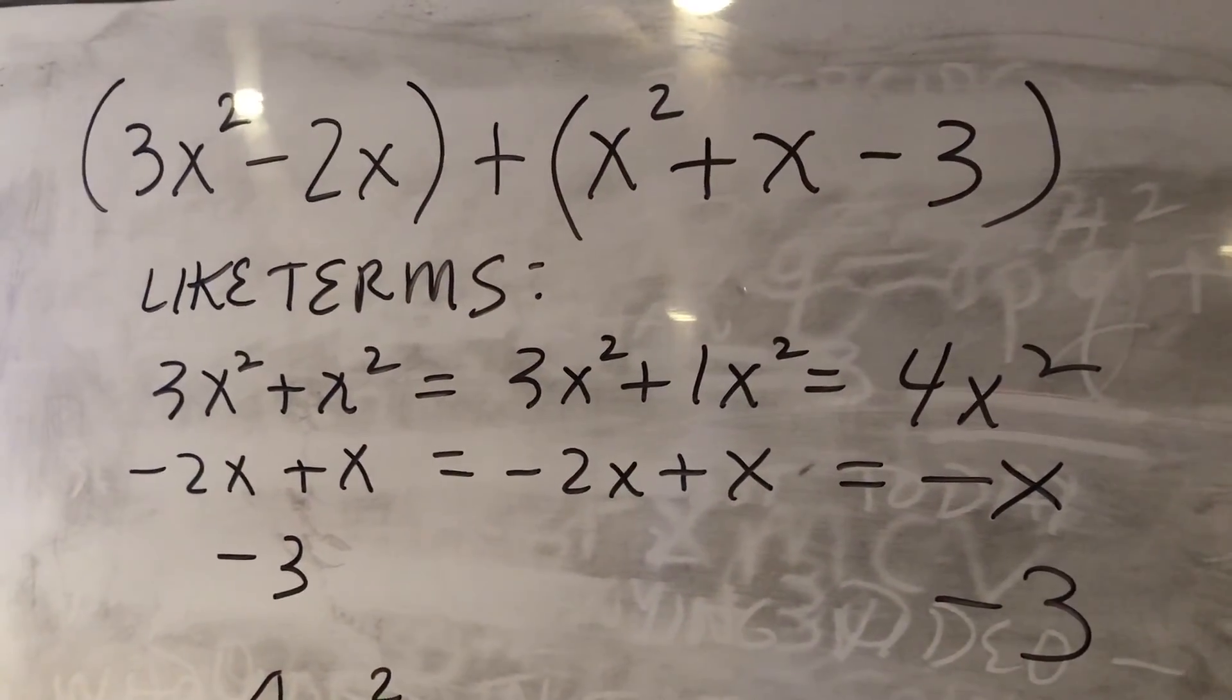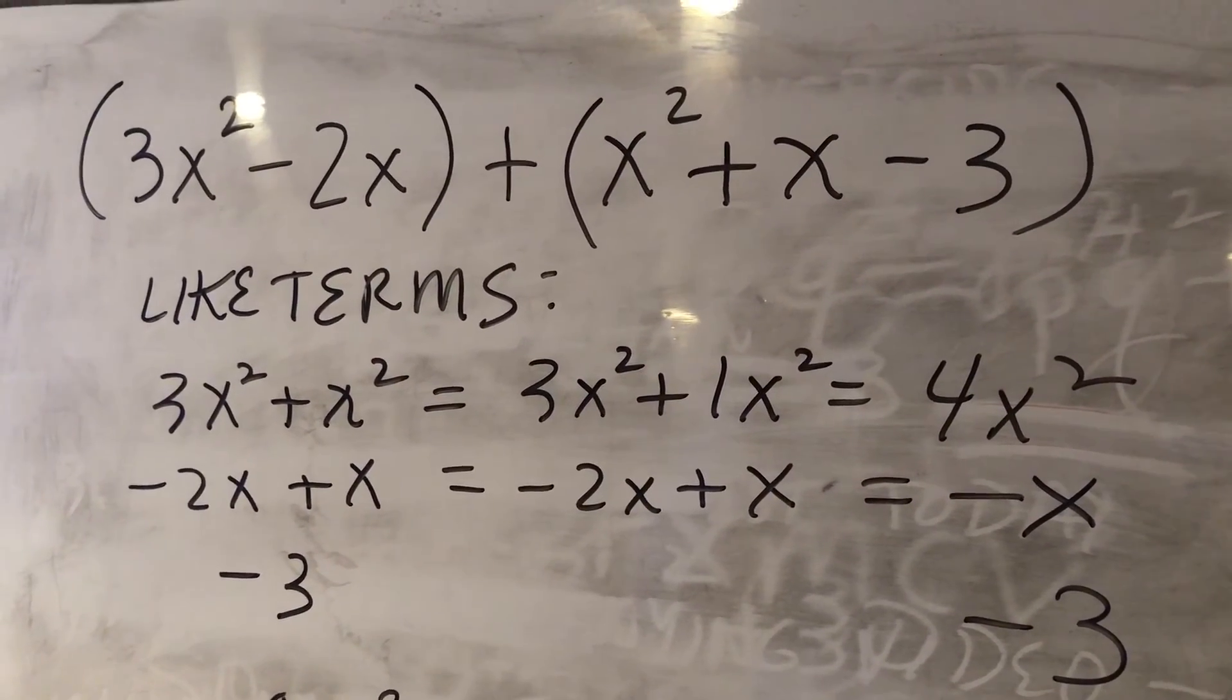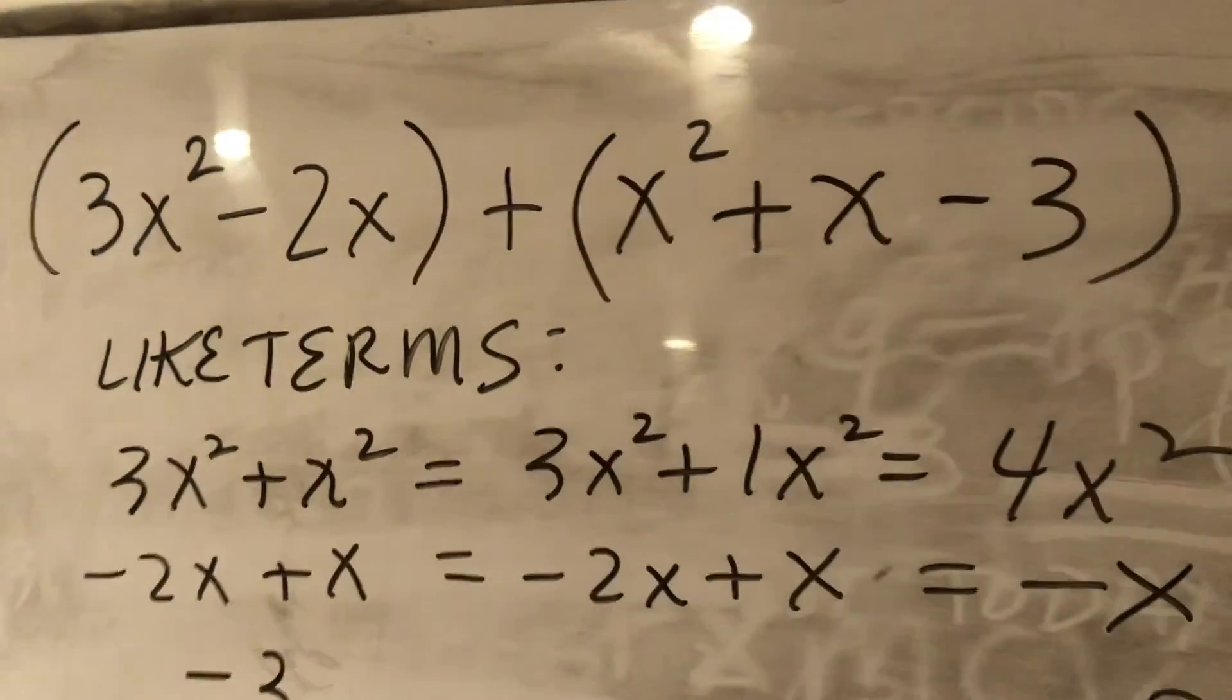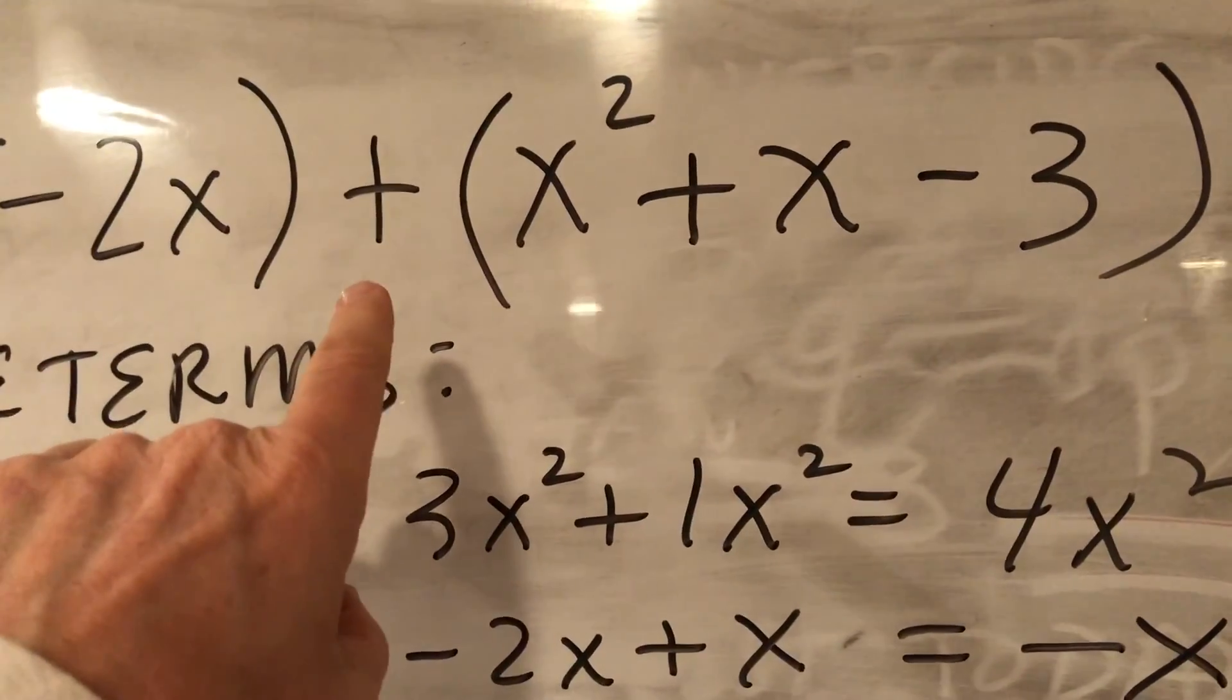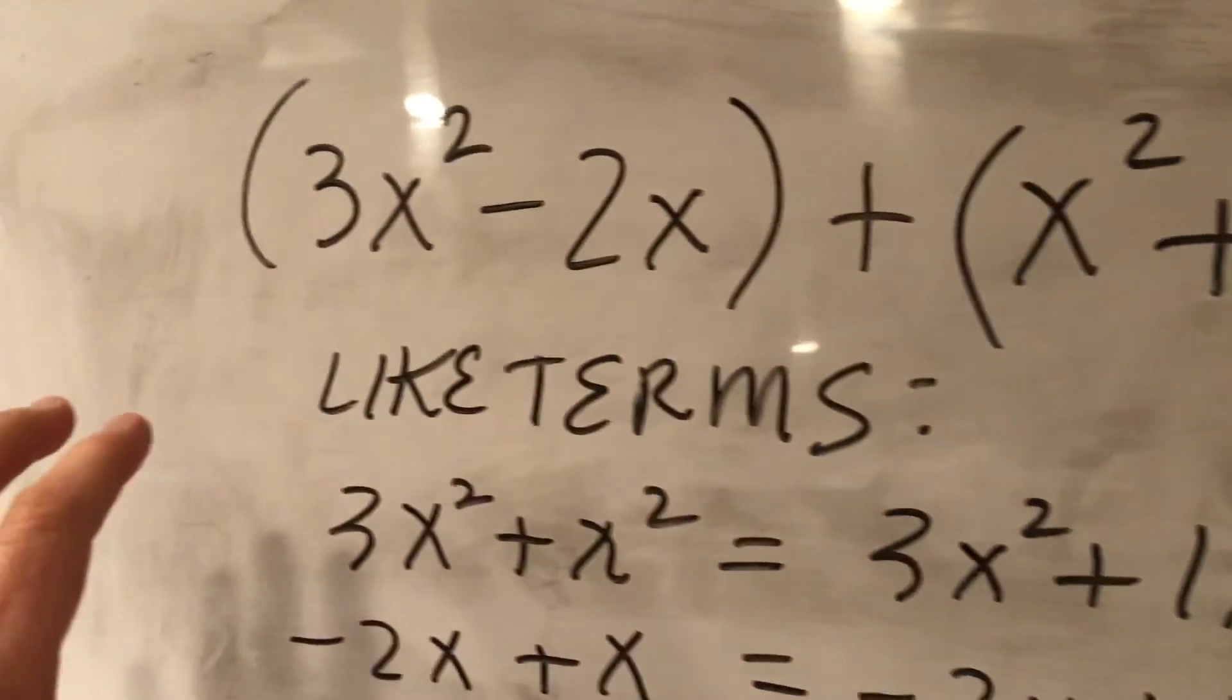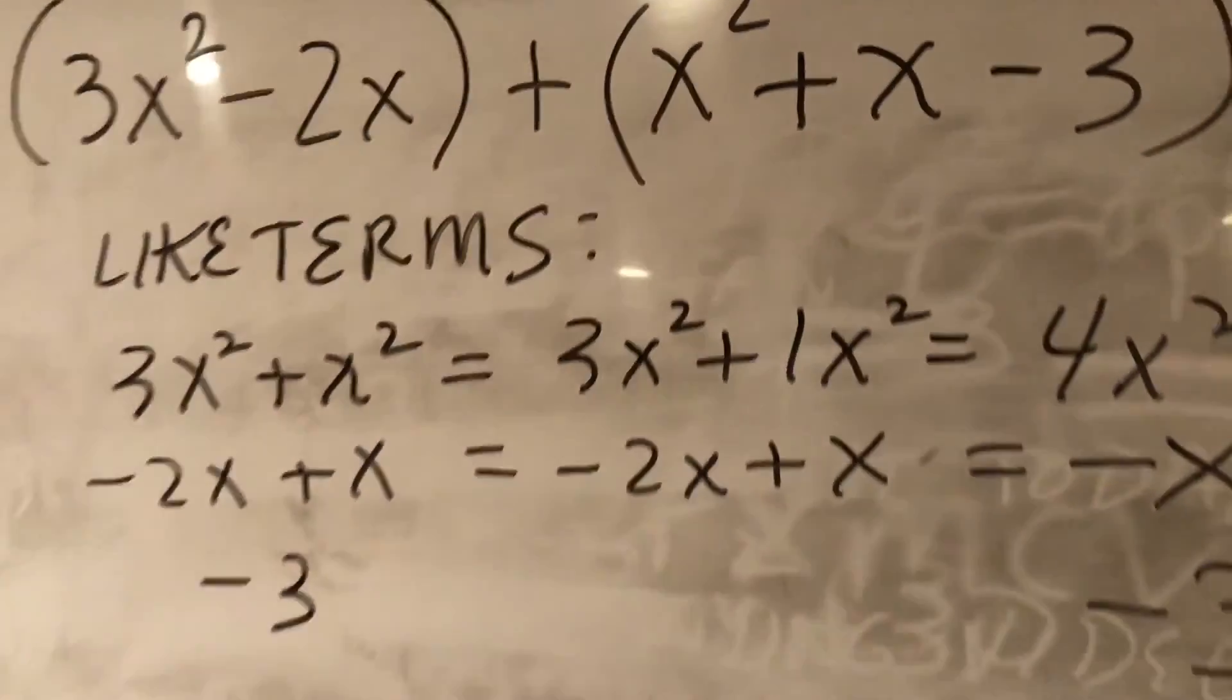Okay so our first question is laid out horizontally so we need to determine in these two quantities what are like terms. This plus sign in the middle tells us that we're going to add this quantity to this quantity, so here we go.